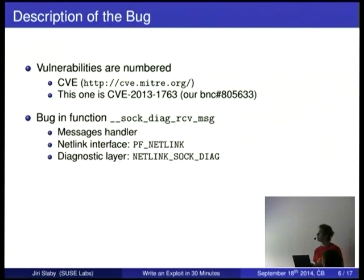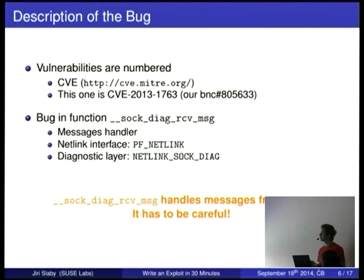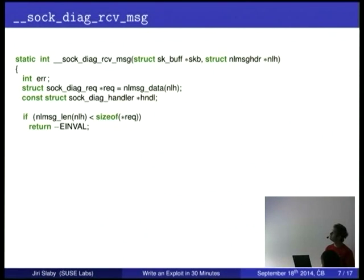Where is the bug? The bug is in a message handler for a netlink interface. A netlink interface is an interface for communicating between the kernel and user. In this specific case this was for the socket diagnostic layer. The user sends some information to the kernel and this is the handler. It should be very careful what the data are because the user can be evil. The first argument is not interesting for us. The second one is the message.